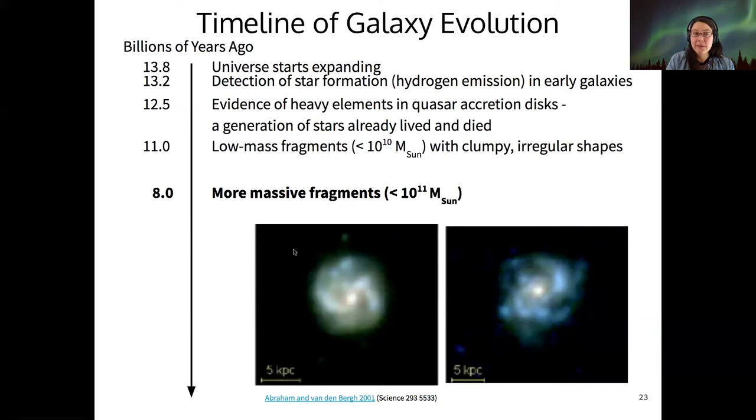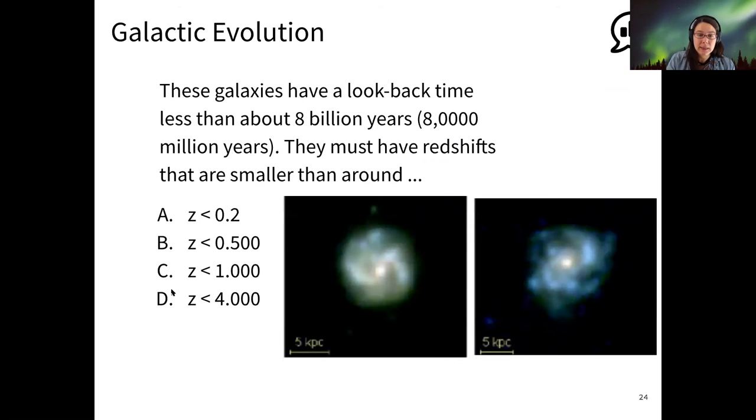If we compare that to some of the more massive fragments, the ones you were looking at in the activity are around 8 billion years old. These are one order of magnitude larger than these lower mass fragments and a few billion years later. Somehow these more massive proto-galactic fragments that are starting to look sort of like spiral galaxies eventually become the sorts of spiral galaxies we see today.